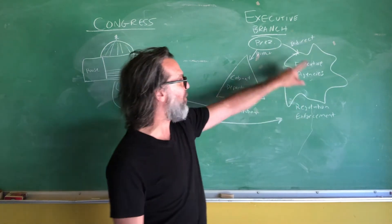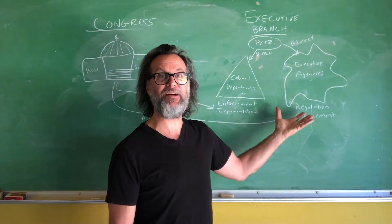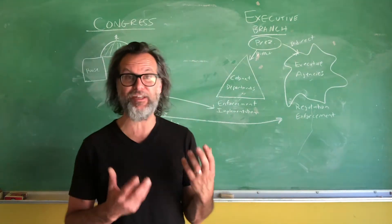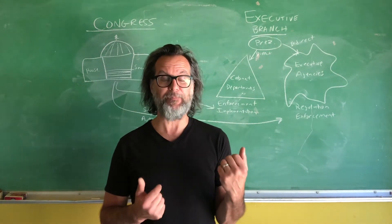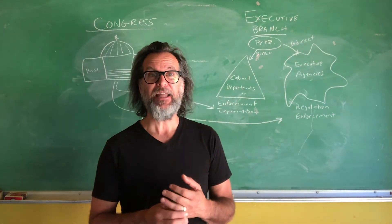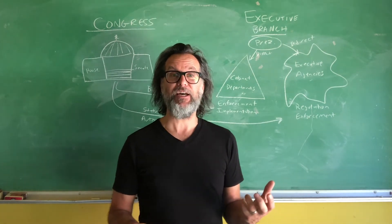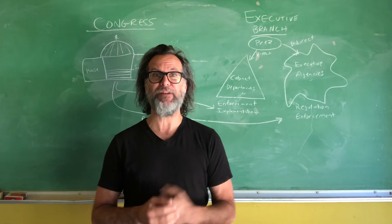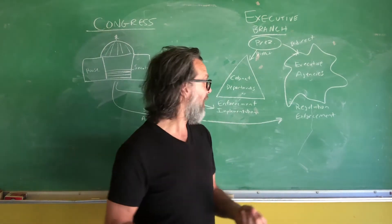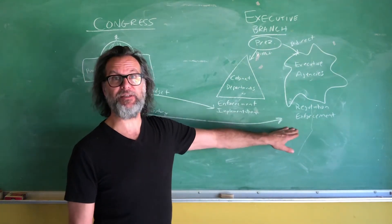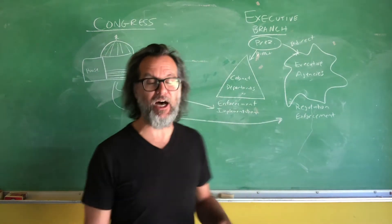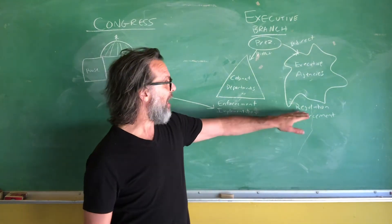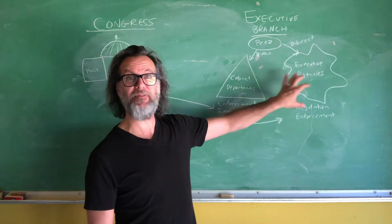The other side of the executive branch contains agencies that come in many shapes and sizes — the EPA, the CIA, the Postal Service as a government corporation, the FCC with its five board members. They are differently shaped, sized, organized, and authorized. They are all involved in regulation and enforcement. Some enforce their own regulations; more commonly, they enforce a combination of their own regulations and regulations passed by Congress. But regulation is the most important function of most executive agencies.